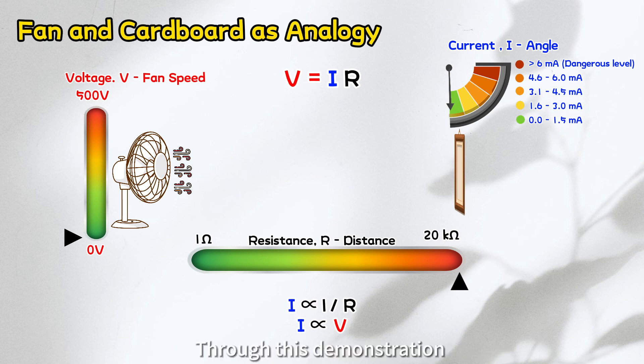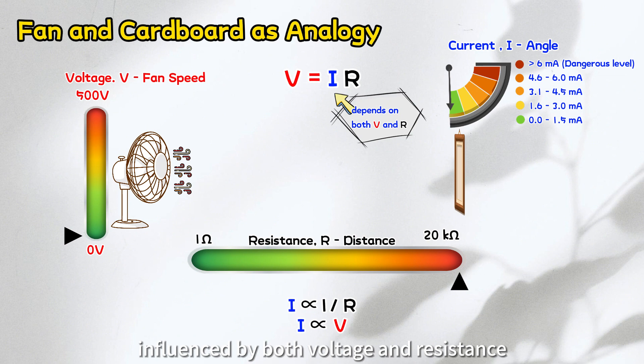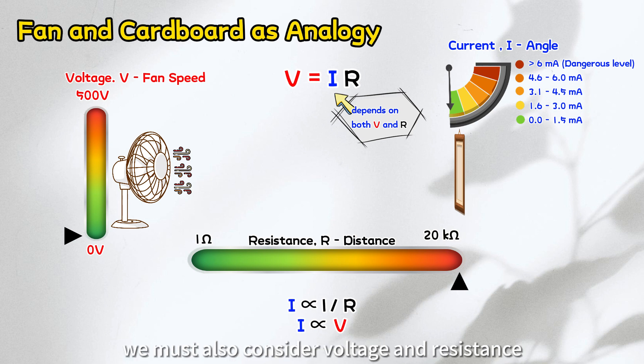Through this demonstration, we understand that current is influenced by both voltage and resistance. Therefore, to determine whether a current poses a hazard to humans, we must also consider voltage and resistance as per Ohm's law.